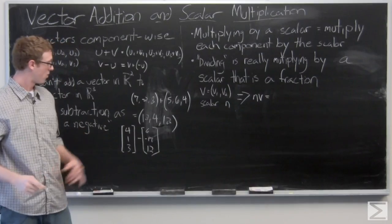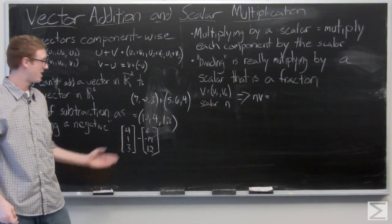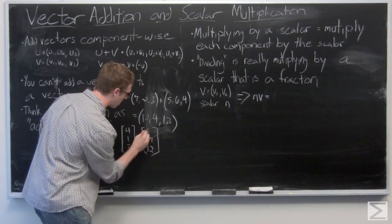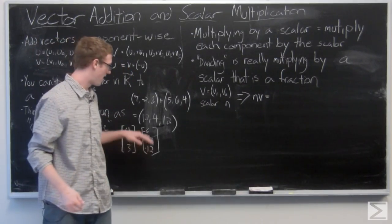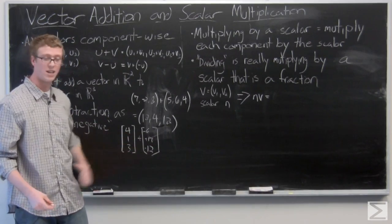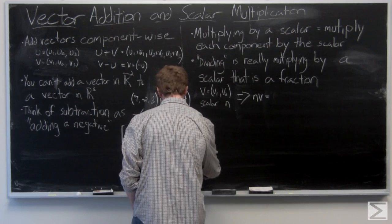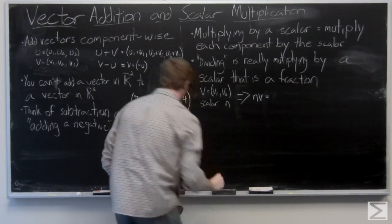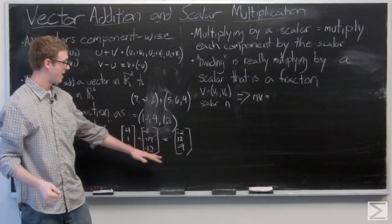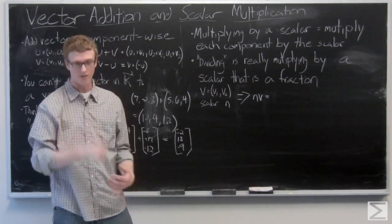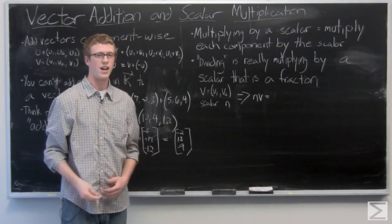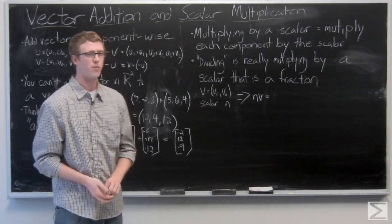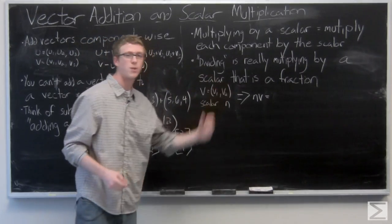So we have (4, 1, 3) minus (6, -17, 12). We're going to do plus a negative, so this vector is going to become plus (-6, 17, -12), and your result in vector is going to be (-2, 18, -9). So that's just the basics of vector addition. It's very simple, just make sure that you're adding component-wise, and when you're subtracting vectors make sure you're adding a negative. We'll look at why in the geometric interpretation of that.